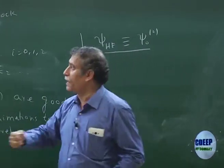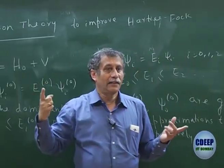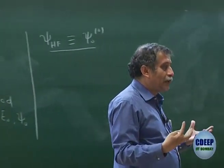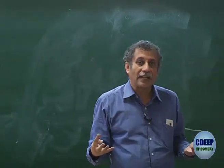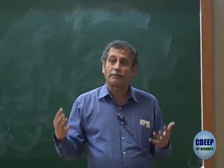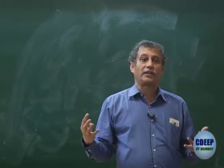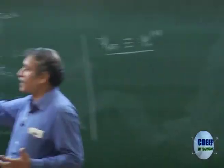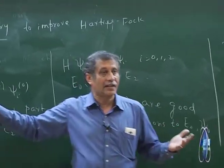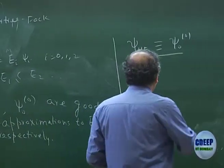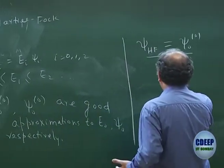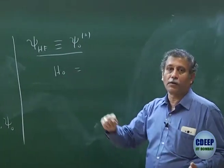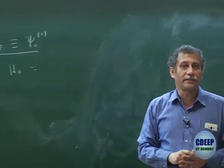It is not an eigenfunction of H, but then we have to find out whose eigenfunction it is, because that will be my H₀. If I can identify a Hamiltonian whose eigenfunction is ψ_HF, then I can think of that as H₀, and then I will see whether the entire solutions of that H₀ are available or not — because that is another condition. So can you guess an H₀ whose eigenfunction would be ψ_HF as the ground state eigenfunction?